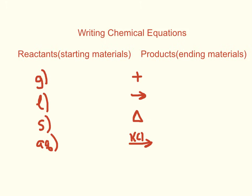First of all, in order to write a proper chemical equation, you need to know some things about it. You need to know that the reactants always are the starting materials, and those always go on the left. The products are the end materials, and they go on the right. And in between them, you have an arrow pointing from the reactants to the products.